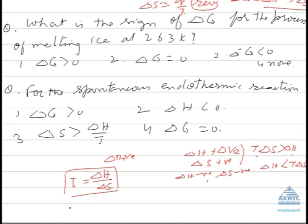Now coming to questions regarding this, what is the sign of delta G for the process of melting of ice at 263 Kelvin? You very well know melting of ice takes place at 273 Kelvin, means it is at equilibrium at 273 Kelvin. It means if the temperature is below 273 then delta G will be positive because the reaction will not be possible, the melting will not be possible.